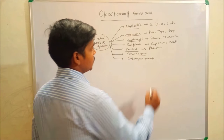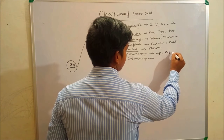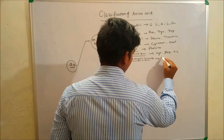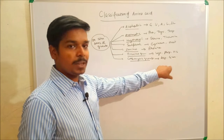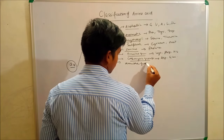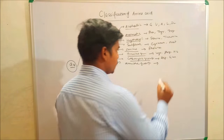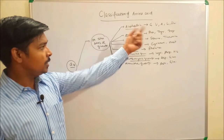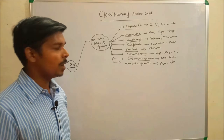In the amino group, three amino acids are lysine, arginine, and histidine. For the carboxyl group: aspartate and glutamate. One more classification is the amide group — two amino acids: asparagine and glutamine. These are the 20 standard amino acids classified on the basis of R group.